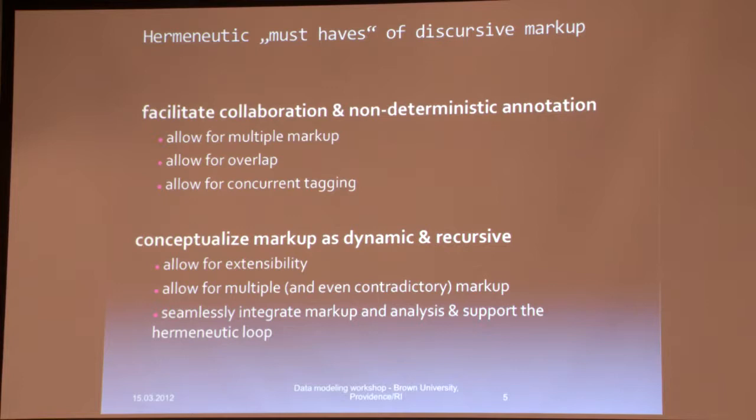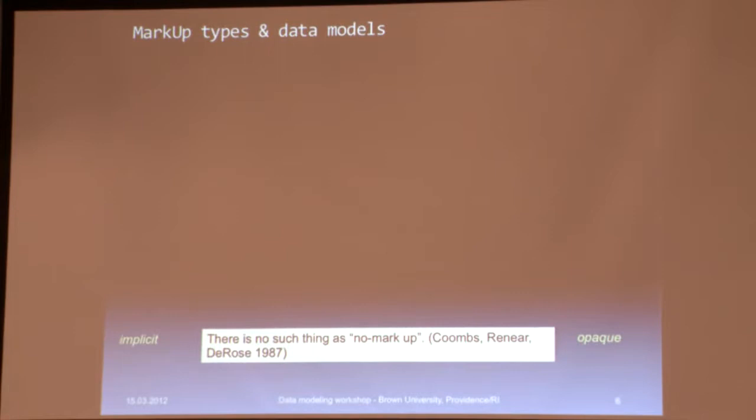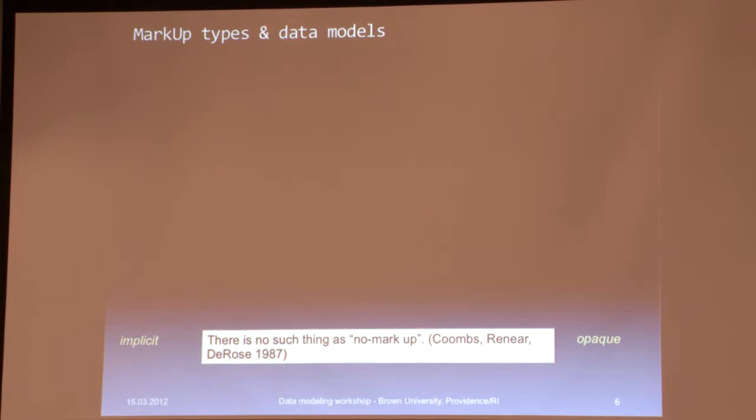This brings us to an attempt to develop a taxonomy of markup types and data models underlying what we were doing. My starting point is a remark by Elaine, among others, who wrote this wonderful sentence: 'There's no such thing as no markup.' So it's not as if we start with something that doesn't have markup. We have a type of markup that is implicit in the text — I would just call it an overt markup data model. It is there, but nobody's actually realized that it is there.